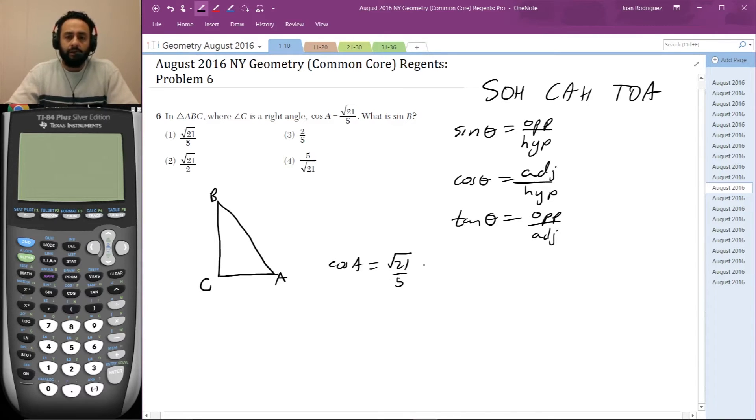This is adjacent over hypotenuse—cosine is adjacent over hypotenuse according to SOH-CAH-TOA. So cos A, this is A, adjacent is √21, and 5 would be the hypotenuse.